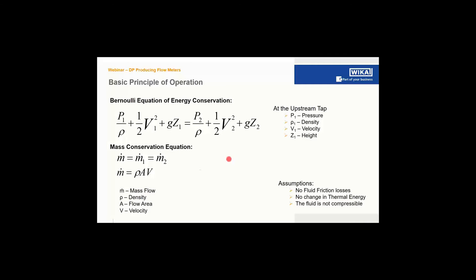Mass flow can be expressed as density times cross-sectional area times velocity. So as the area gets smaller, velocity gets larger; as the area gets bigger, the flow slows down. Keep this in mind when looking at primary flow elements.